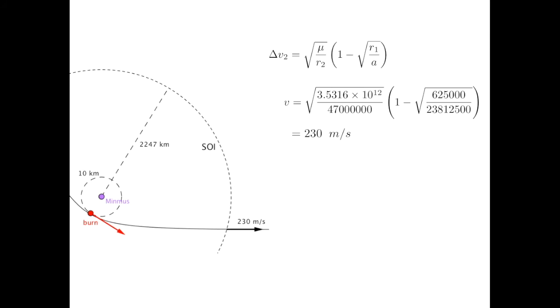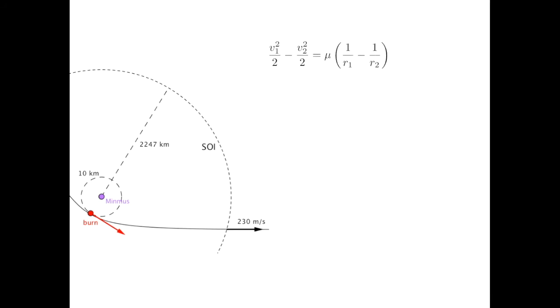We need to calculate the velocity required at an altitude of 10 kilometers in order to have a velocity of 230 meters per second at a radius of 2,247 kilometers. When I first derived the Vis Viva equations back in episode 3, I spent a fair amount of time talking about conservation of mechanical energy. While exploring how energy is conserved in an orbit, I developed this equation. This formula relates the velocity and radii of any two locations in an orbit. The orbit doesn't need to be circular. It doesn't even need to be an ellipse.